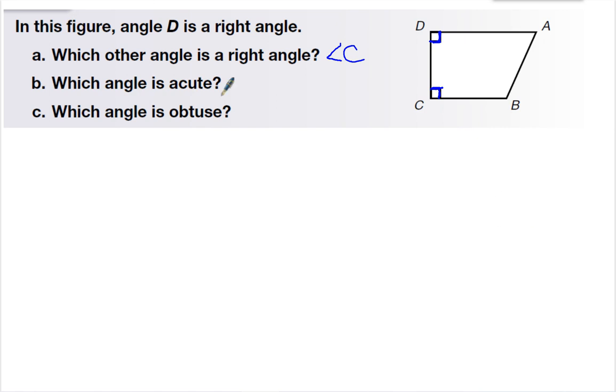Then, it says which angle is acute. So I'm going to look at the two angles, at this one here, and this one here. Well, I can see that angle A is a small angle. So I know that angle A is acute.